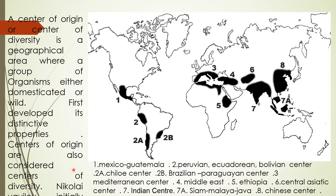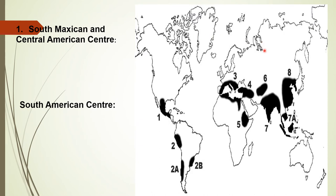Nikolay Vavilov initially identified eight of these centers, later subdivided into 12 in 1935. The first one is Mexico, the second is the Peruvian-Bolivian center, then the Brazilian-Paraguayan center, the Chiloe center, the third is the Mediterranean center, fourth is the Middle East, fifth is Ethiopia, sixth is the Central Asiatic center, seventh is the Indian center, with 7A being the Indo-Malayan (Java) center, and eighth is the Chinese center.